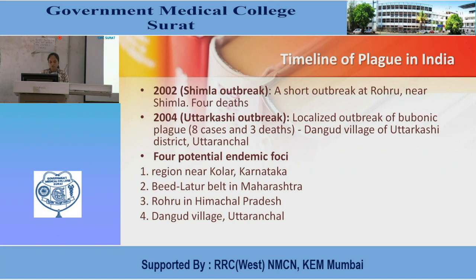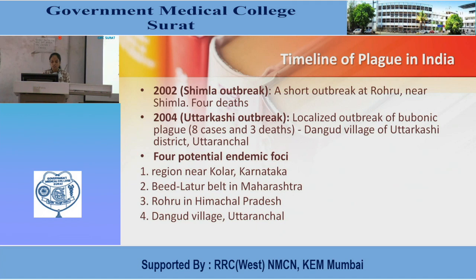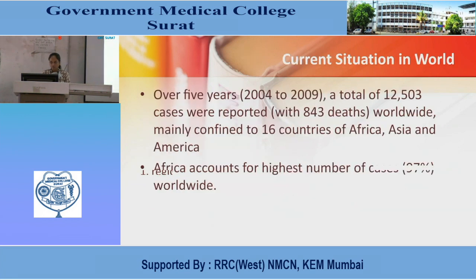In 2002, a Shimla outbreak occurred — a short outbreak near Shimla with 4 deaths reported. In 2004, an Uttarkashi outbreak occurred — a localized outbreak of bubonic plague with 8 cases and 3 deaths in Dangut village of Uttarkashi district, Uttaranchal. Four potential endemic foci for plague are: the region near Kolar in Karnataka, the Beed-Latur belt in Maharashtra, Rohru in Himachal Pradesh, and Dangut village in Uttaranchal.